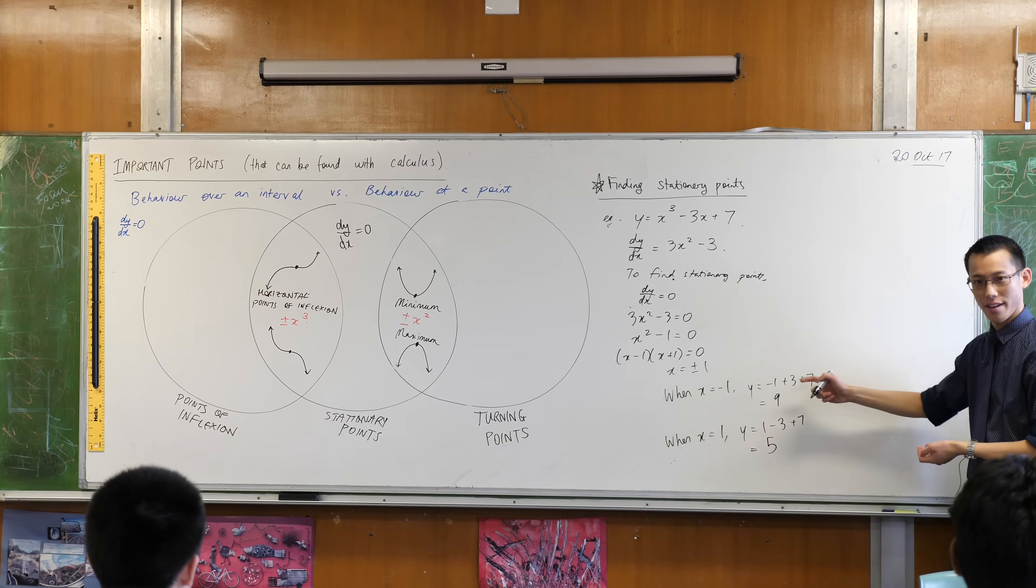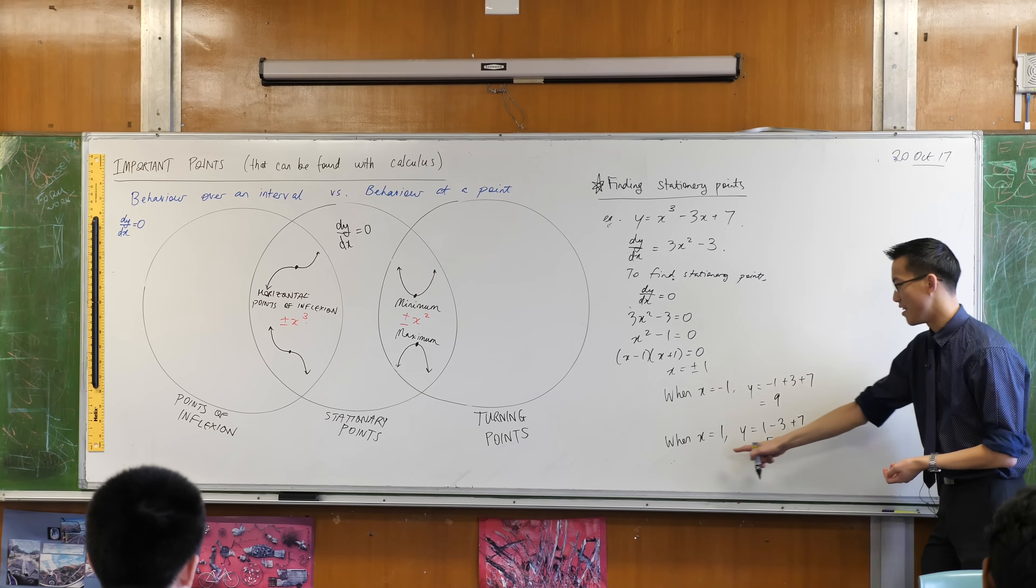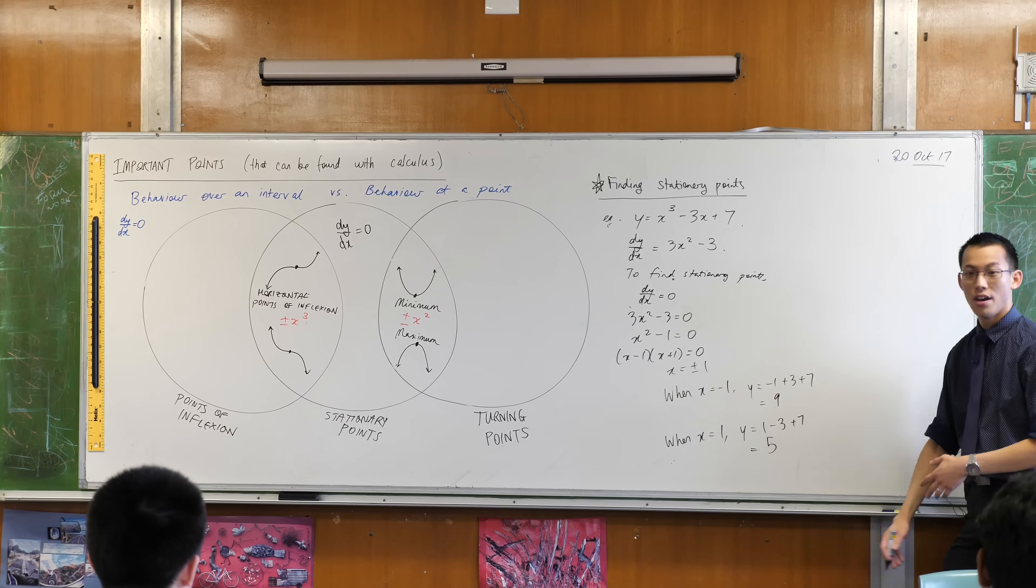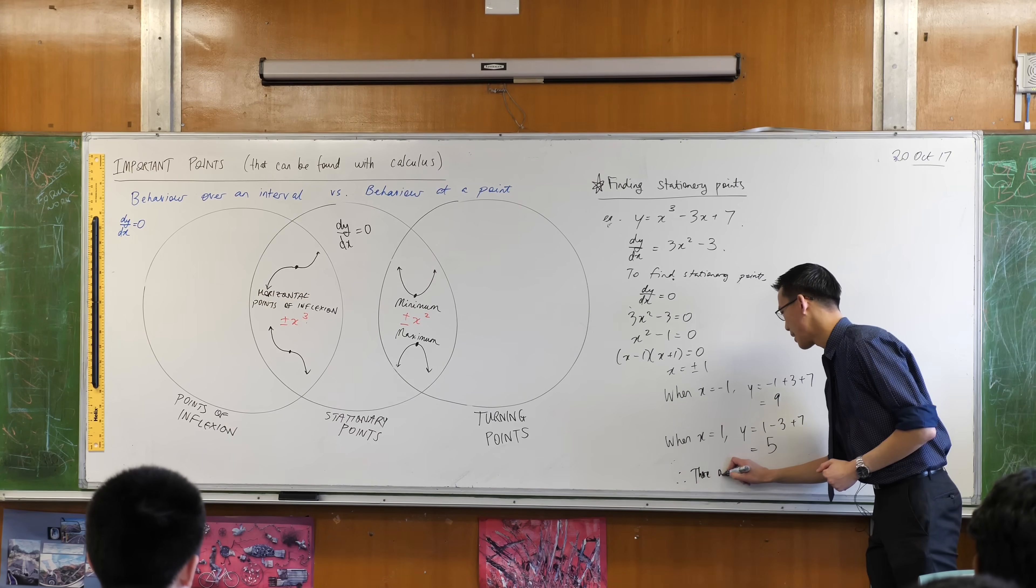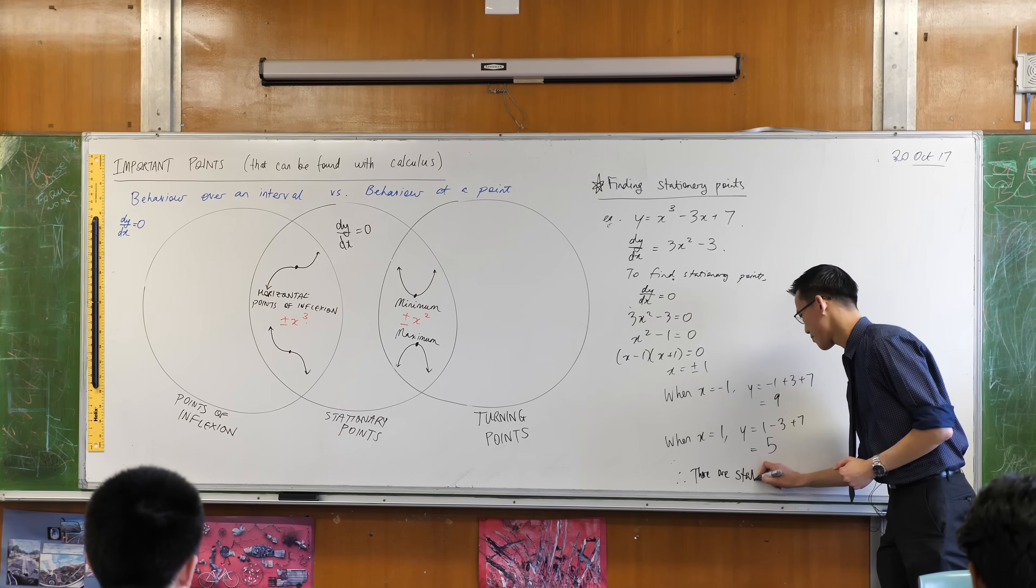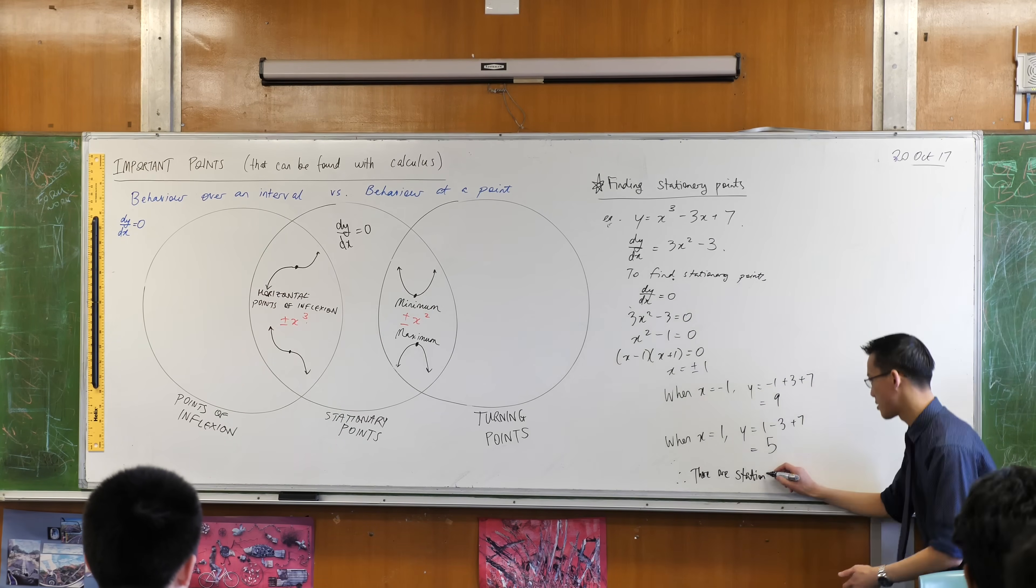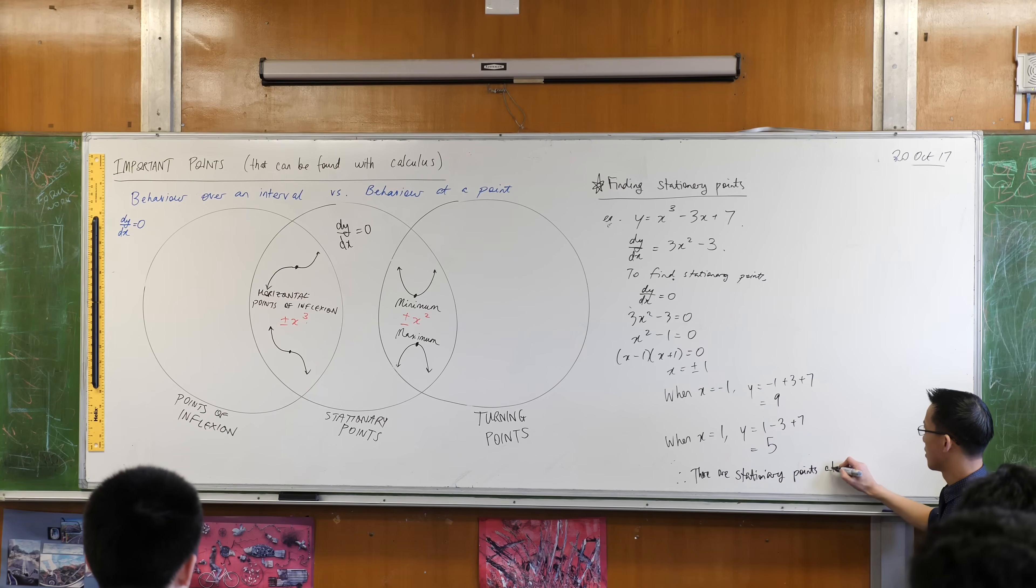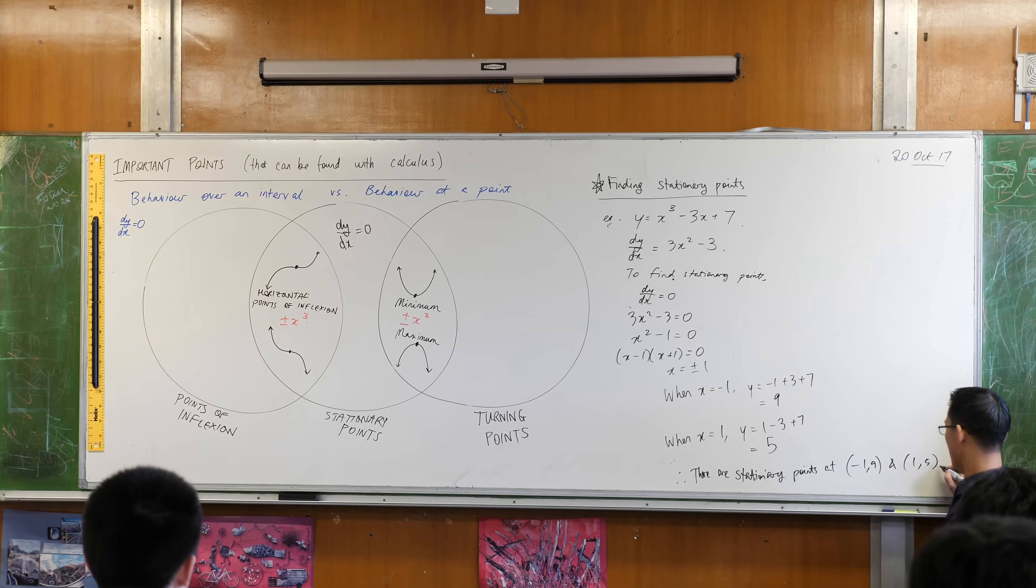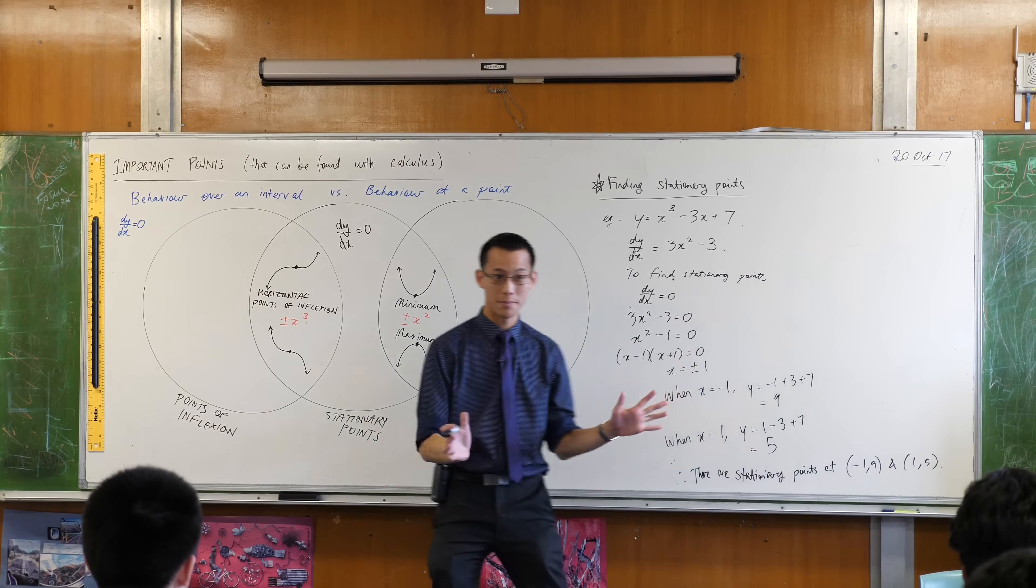So I've got an x value and its matching y, another x value and its matching y. So now I can conclude. I can say therefore there are stationary points at, and then tell me the coordinates. Yep. Minus 1 comma 9 and 1 comma 5. Full stop. Finished.